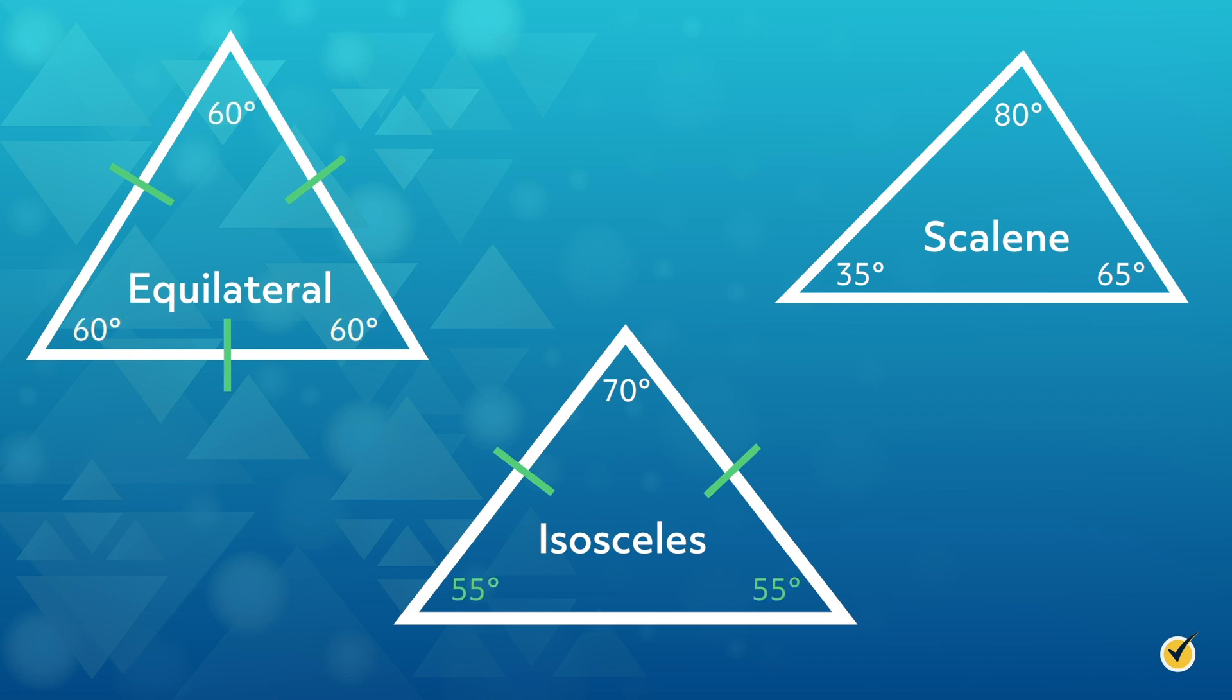When two of the angles are the same, it's an isosceles triangle. And when none of the angles are the same, it's a scalene triangle.